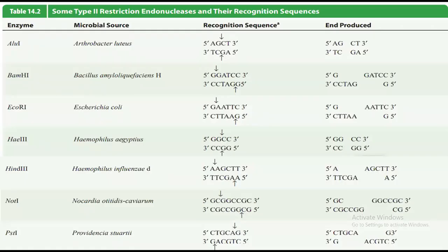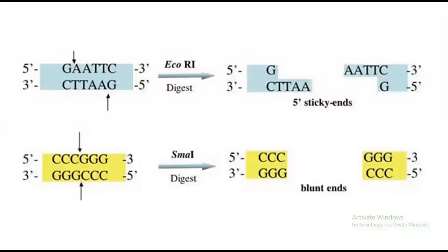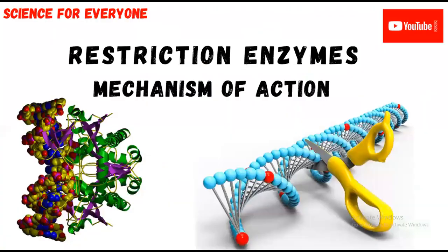So that was all about restriction enzymes. I discussed the history, who discovered them, the definition, the diagram, the types of bonds broken, the mechanism of cutting, sticky ends, blunt ends, five prime overhangs, and three prime overhangs. I hope you understood this video. If you have any questions, ask in the comment box. If you liked the video, please like, share, and subscribe to my channel for more science videos. Thank you very much, God bless you.